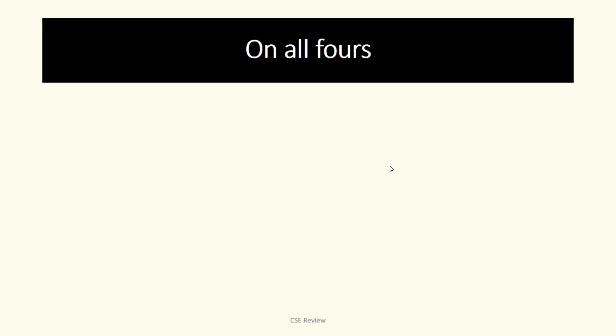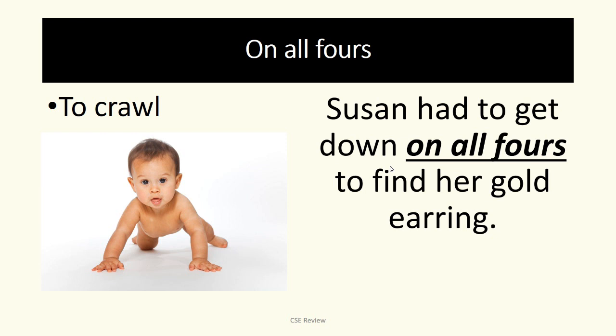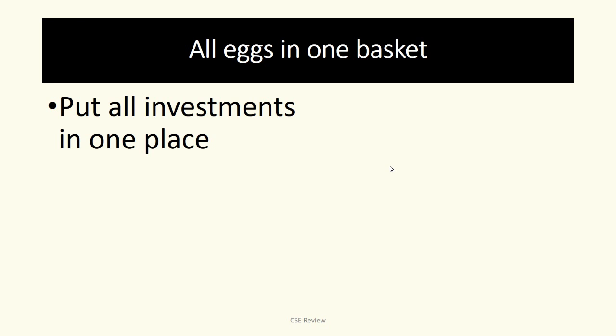On all fours means you're crawling, like a baby. The sentence is: Susan had to get down on all fours to find her gold earring. That means Susan had to crawl to get her earring. On all fours - four limbs, two hands, two feet.